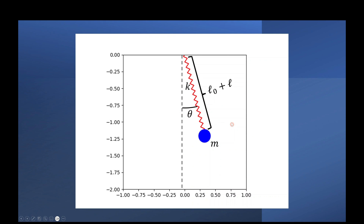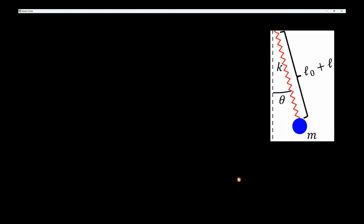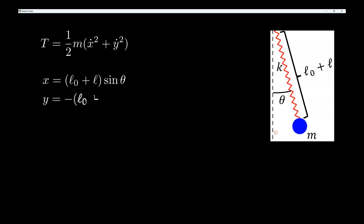Now let's derive the equations of motion using Lagrangian mechanics. Starting with the kinetic energy: because all of the mass is concentrated at one point, the kinetic energy is simply one half m v squared, where v squared is x-dot squared plus y-dot squared. We can read off x and y from the figure — x is the spring length times sine of theta, and y is the negative spring length times cosine of theta, because the y-axis points up and the pendulum hangs down.